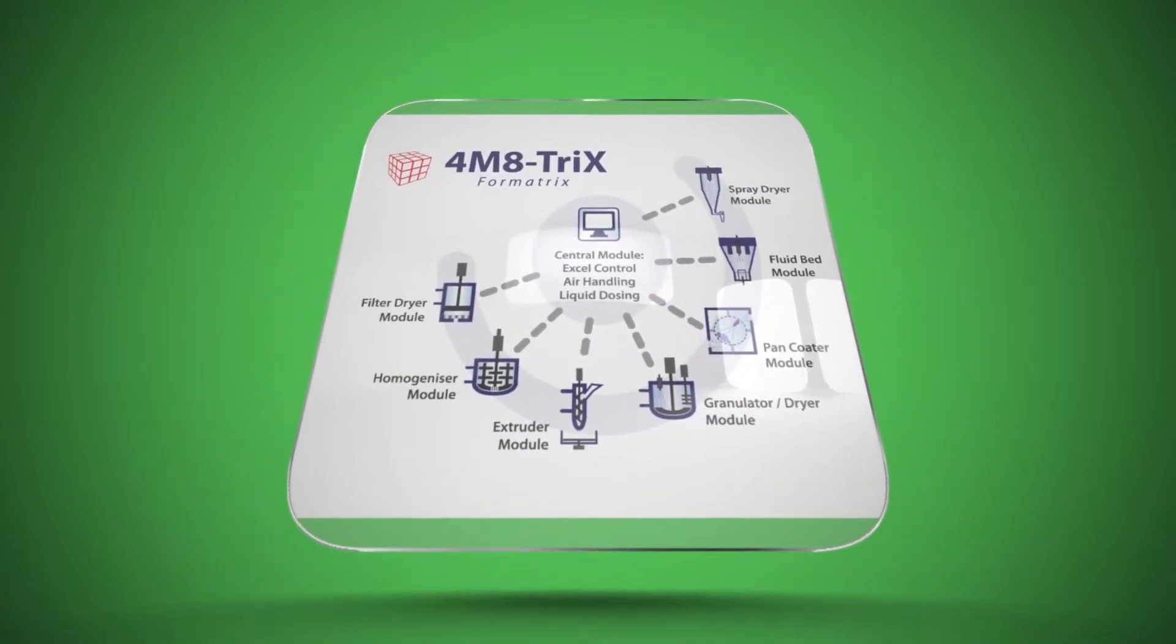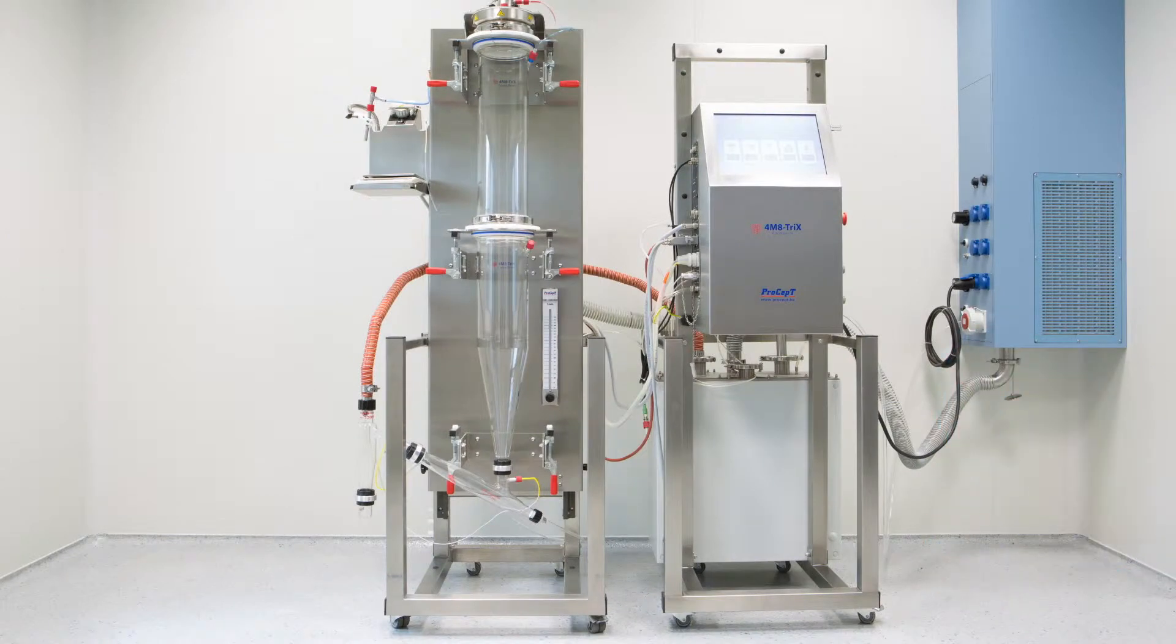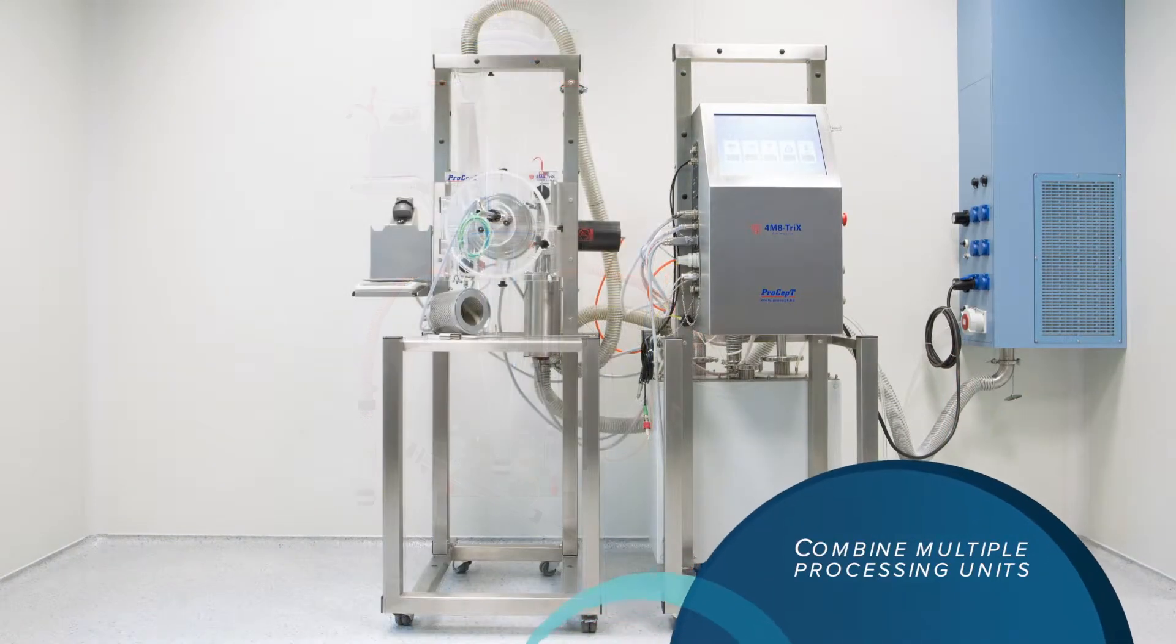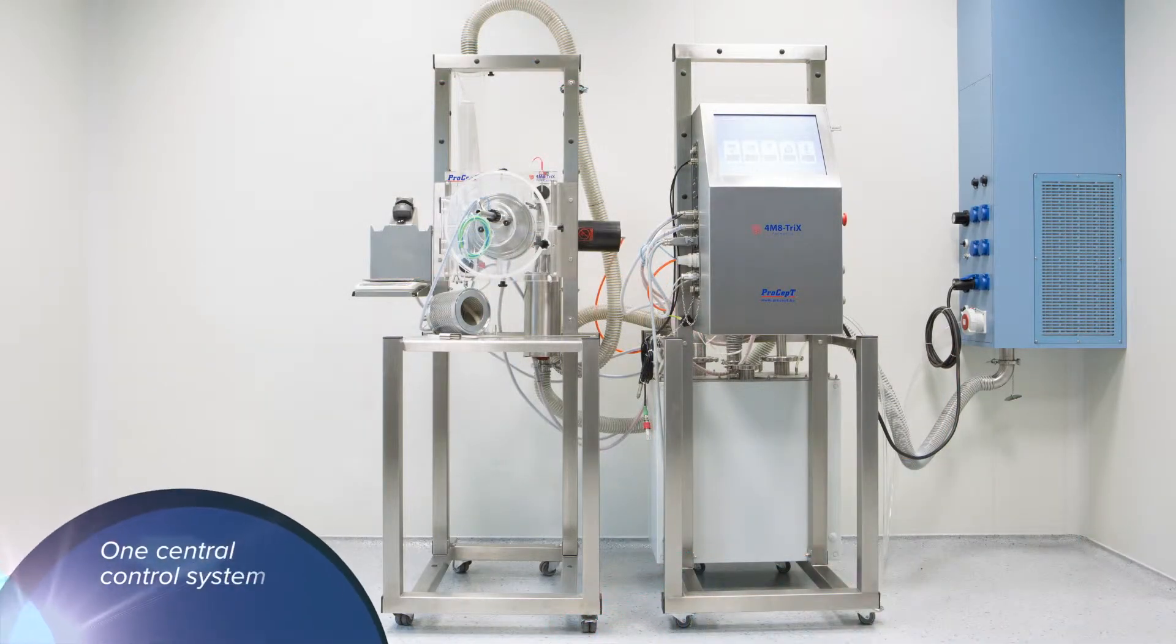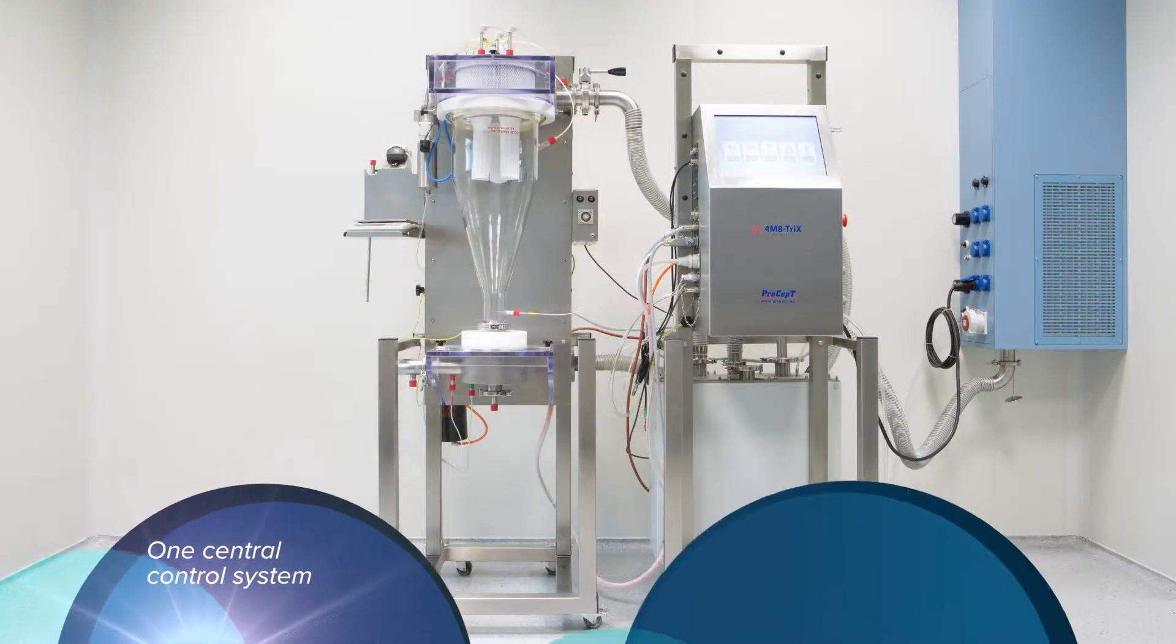With Formatrix, we have introduced a new way of thinking. Our product matrix allows customers to combine multiple processing units with one single central control system, auxiliary equipment and air handling.